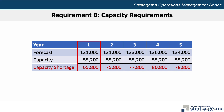Year 1's capacity shortage is 121,000 forecast units minus the capacity of 55,200 units, which equals a shortage of 65,800 units. Applying the same methodology to the remaining years gives shortages of 75,800 units in year 2, 77,800 in year 3, 80,800 in year 4, and 78,800 in year 5. This capacity shortage tells us that in order to meet forecasted demand, the company will require more machines.